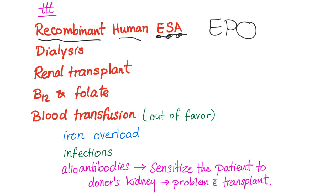Blood transfusion is now falling out of favor because we have the new human ESA. Blood transfusion has many side effects: iron overload, infections, and alloantibodies. These alloantibodies sensitize the patient to the donor's kidney. If we perform a renal transplant in a patient who has received a lot of blood transfusions, they will have many alloantibodies — antibodies to other people, not self (self would be auto). These alloantibodies will attack the donor kidney, making renal transplantation a problem.